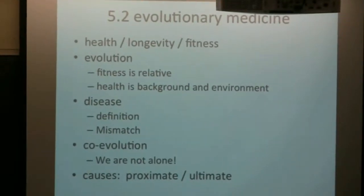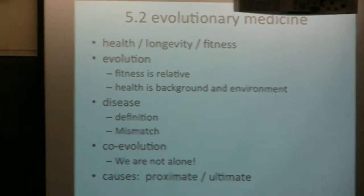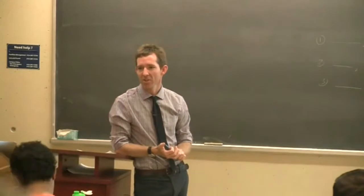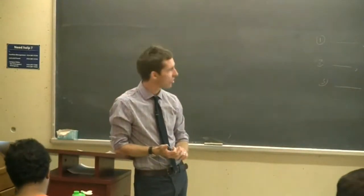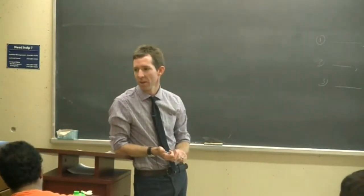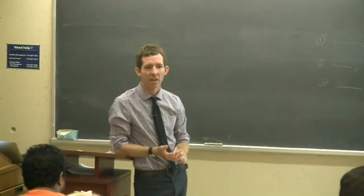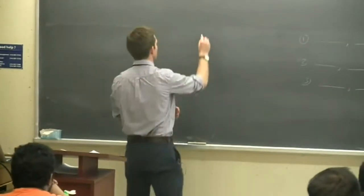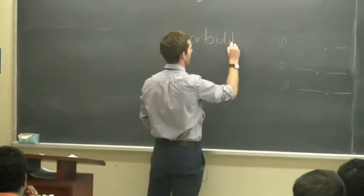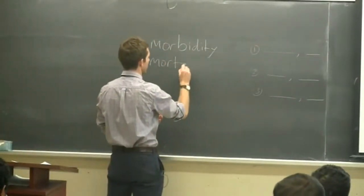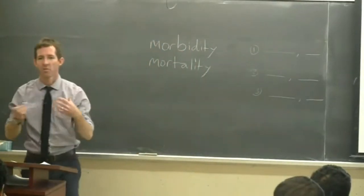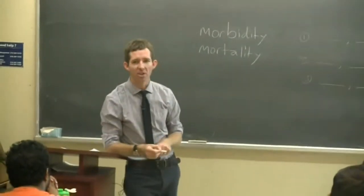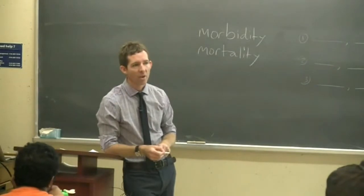So, evolutionary medicine. First things first, we need to set up some distinctions. We're not doctors in this room, even though some of you may aspire to be doctors someday. We're learning how to think like ecological anthropologists. Medicine is concerned with health and, to a similar extent, longevity. The two primary concerns of modern biomedicine are morbidity — that is, the incidence of disease — and mortality, which is death. As ecological anthropologists, strictly speaking, we don't care about either of those things. We care about fitness.